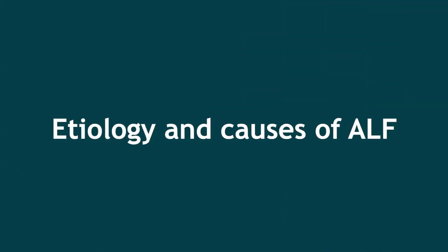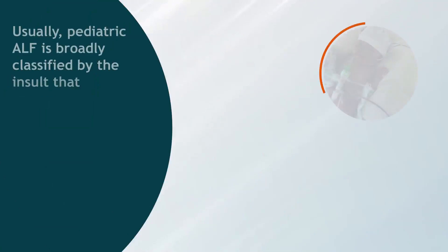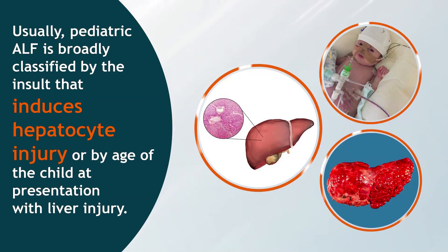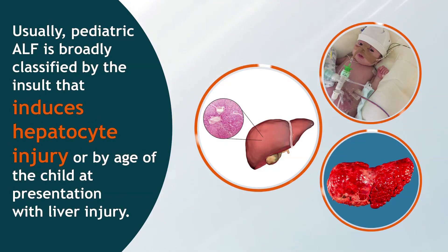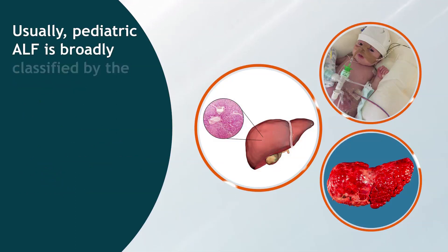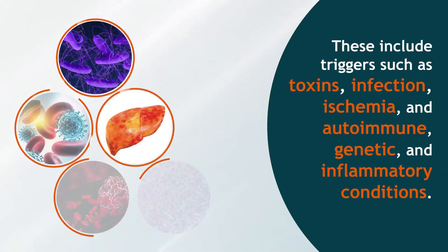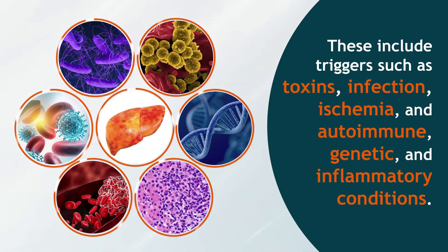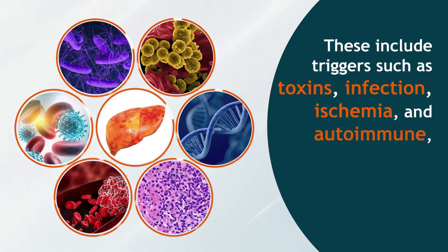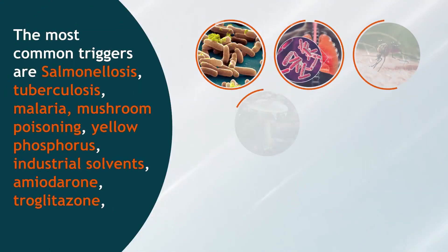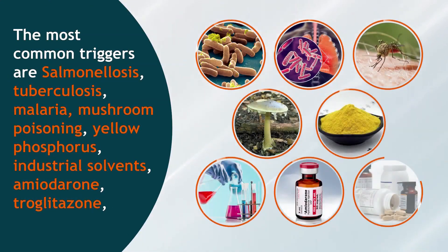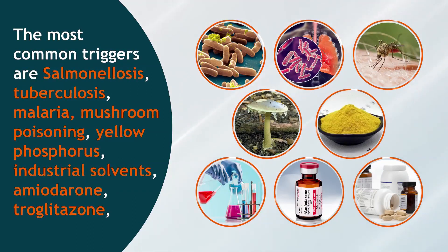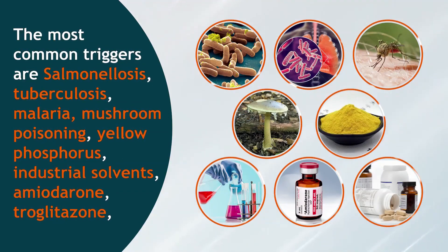Regarding etiology and causes of ALF, paediatric ALF is broadly classified by the insult that induces hepatocyte injury or by the age of the child at presentation with liver injury. These include triggers such as toxins, infection, ischemia, and autoimmune, genetic, and inflammatory conditions. The most common triggers include salmonellosis, tuberculosis, malaria, mushroom poisoning, yellow phosphorus, and industrial solvents.